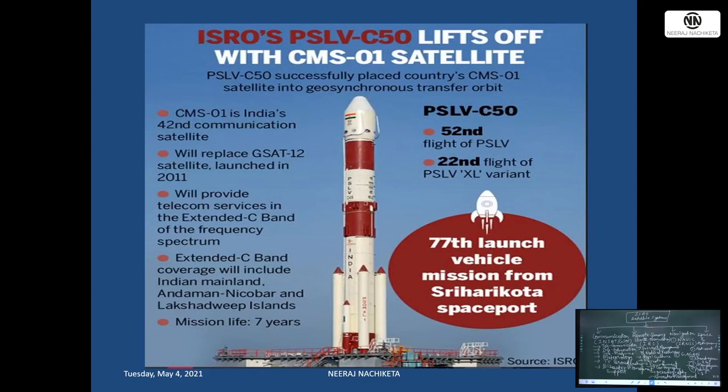PSLV is a 4-stage rocket: first stage solid, second stage liquid (red), third stage solid (white), fourth stage liquid (red). The XL version has 6 solid fuel strap-on motors attached to the first stage. You can see on the image the 6 strap-on rockets strapped to the first stage. Above all this is the payload bay where satellites are kept.